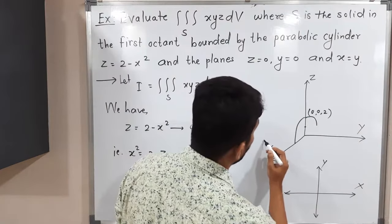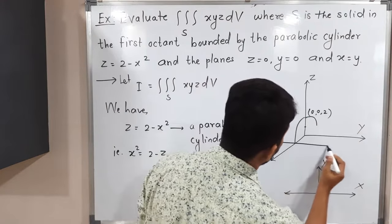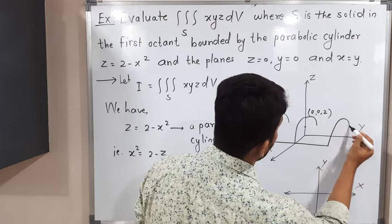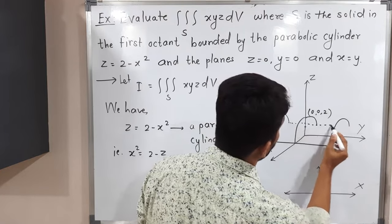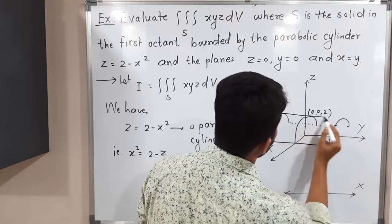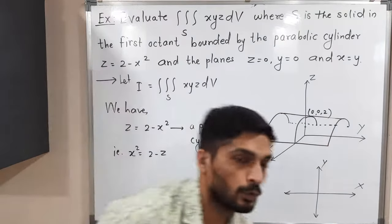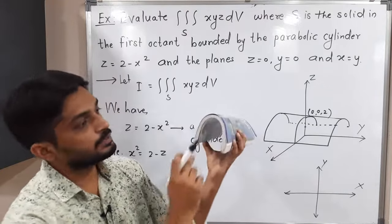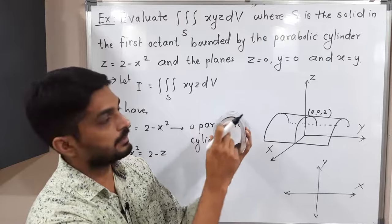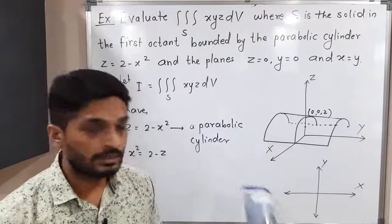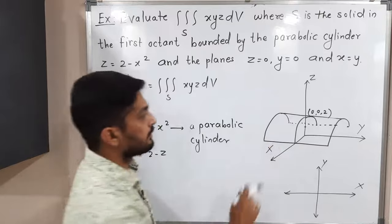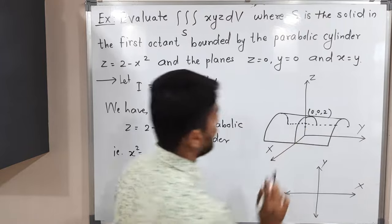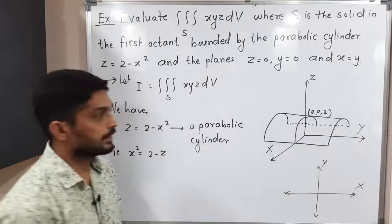Let me draw it. We will have this parabolic cylinder like this. I hope all of you are getting the parabolic cylinder — let me show with the help of this notebook. This type of curve — this type of surface we will have. If you see here, this is a parabola, but actually in 3D it's a parabolic cylinder. So this type of surface we have here. Let us continue now.